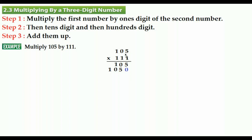Before we multiply the first number by the hundreds digit, you are going to add two extra zeros. Here is the first one and here is the second one. Now it's easy: 1 times 5, write it under the hundreds digit. 1 times 0 is equal to 0, then 1 times 1 is equal to 1.